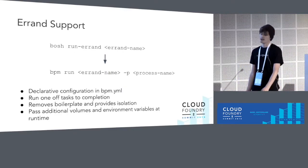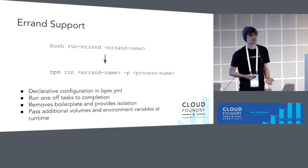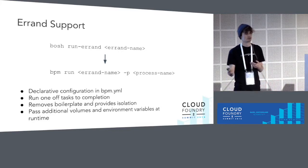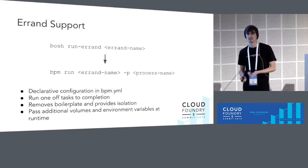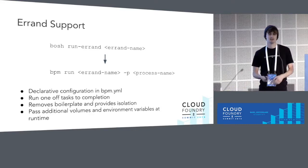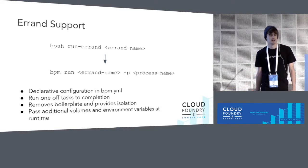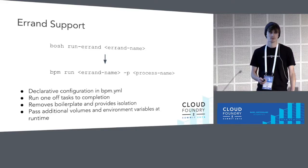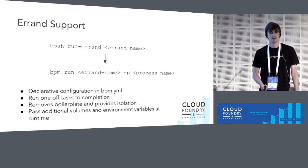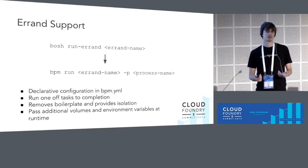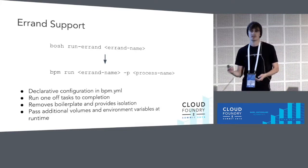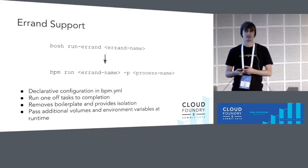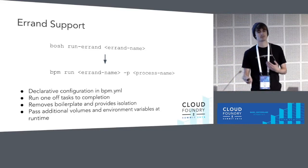Another area we've tackled is errand support. We wanted a mapping for BPM and Bosch run errands, and what we came up with is BPM run. BPM run executes a one-off task to completion and returns its exit code. It's still declarative configuration in the BPM YAML, similar to BPM start, but it still removes boilerplate — you get log redirection, file system setup, and isolation. So you can be confident that your errands, when co-located, are not conflicting with other things on the system.